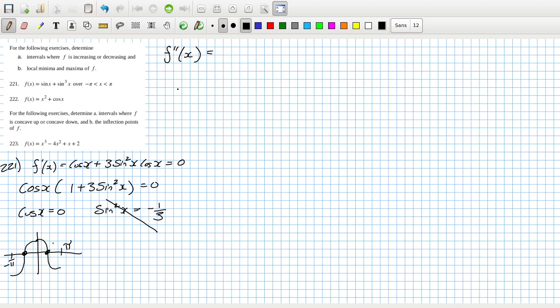So the second derivative will be minus sine x plus 3 sine x cos x cos x minus 3 sin squared x, sine squared x, sine x or sin cubed x.